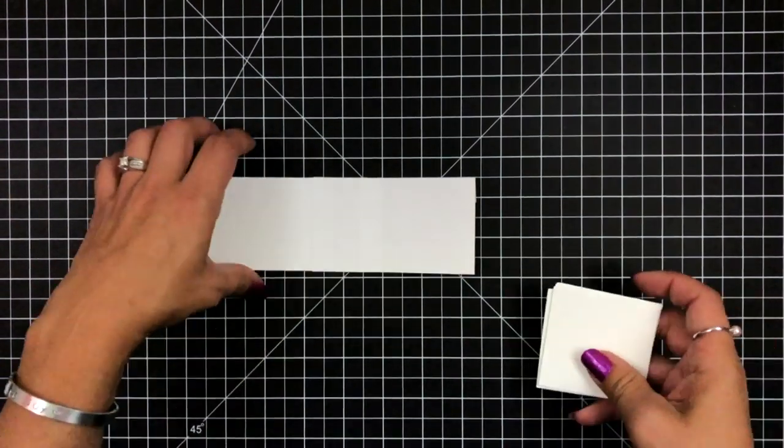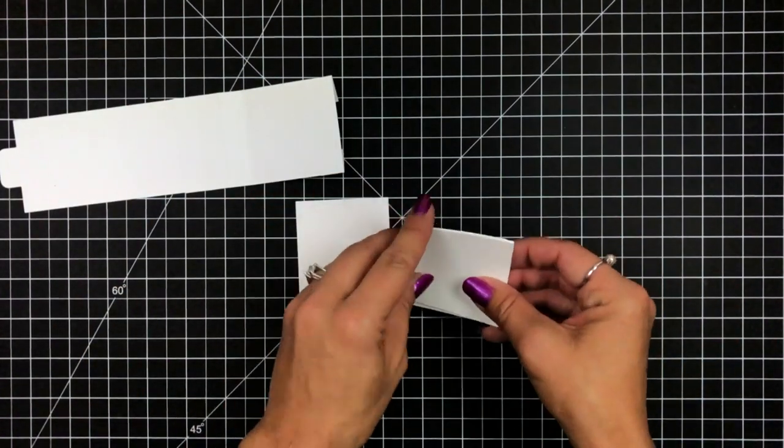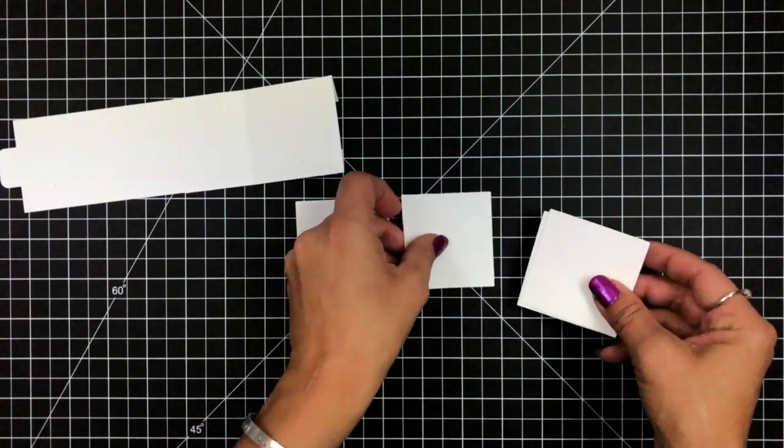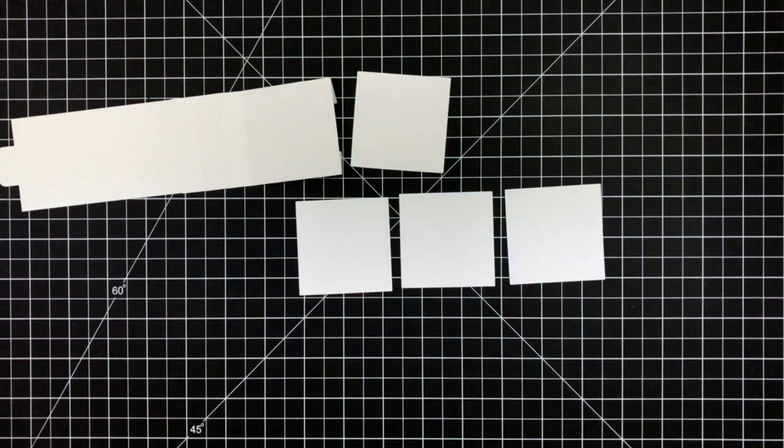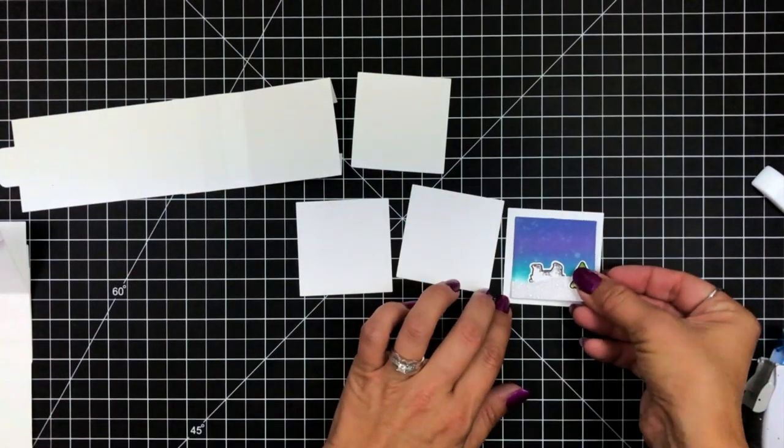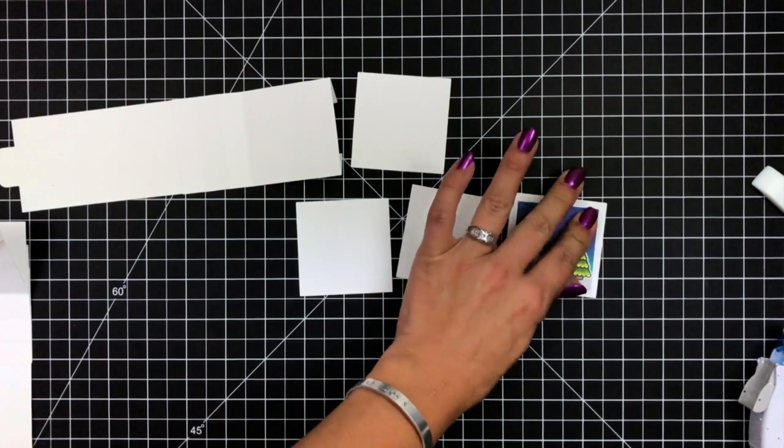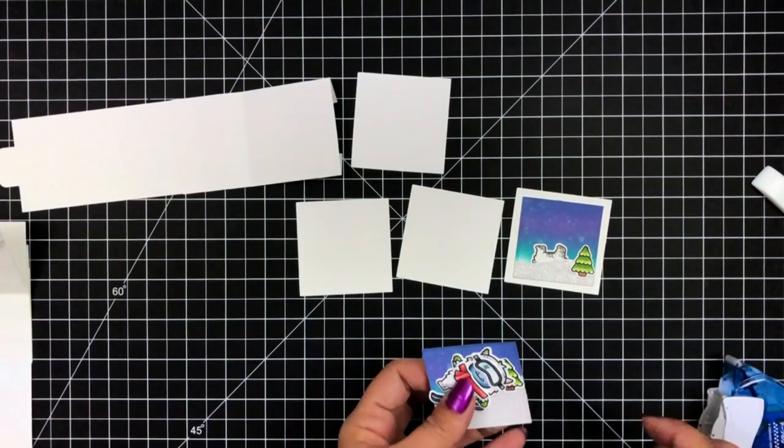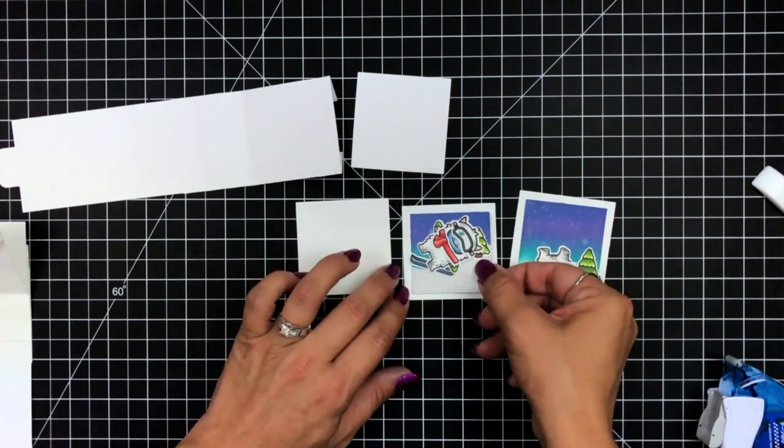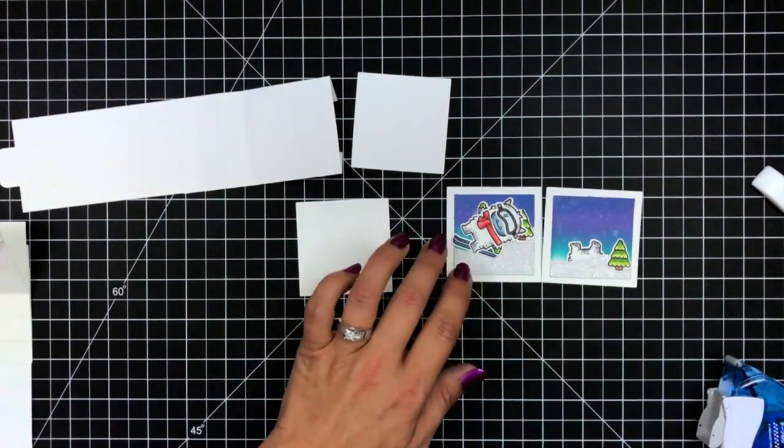So once those are all nice and creased, I'm going to start attaching my panels. Now these are the larger squares that come on the Flippin' Awesome die. I'm going to attach my smaller panels to those. Here I already went ahead and attached my Yetis to create my scene. I apologize, I did do that off camera. I thought I hit the record button.